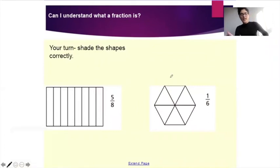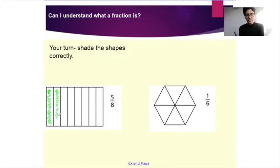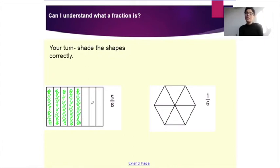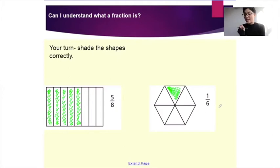Right, let's do this together. So if you look at the first shape, it says here to shade in five out of eight of those slices. That's one, two, three, four, and five. So I've coloured in five out of the eight parts — that now shows my fraction correctly. And the next one is one out of six, so I need to just shade in one part out of the six parts, just like that. That now shows the fraction one out of six, because one has been shaded in.